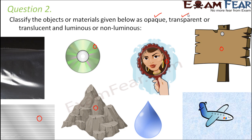Transparent means that object which allows light to completely pass through it. Water is transparent because you can see other objects through it. Air is also transparent — if you couldn't see through air you wouldn't be able to see anything around yourself. A polythene sheet, when it appears very clean and clear, is also a transparent object.